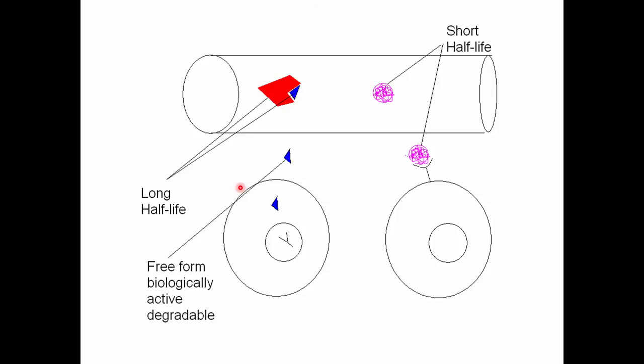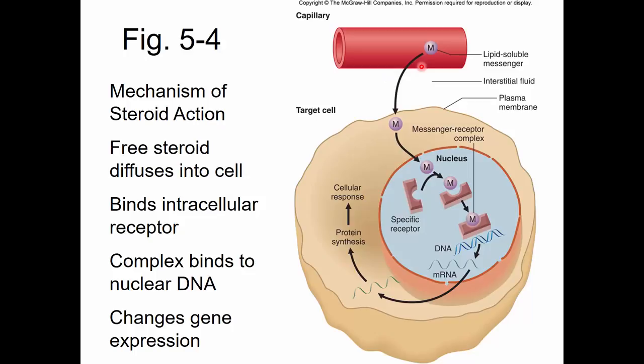In order for a steroid to work, it has to find its receptor, which is inside the cell - sometimes in the cytoplasm, but many times in the nucleus. The free steroid diffuses into the cell, finds its intracellular receptor, and the complex - the receptor and steroid together - acts as a transcription factor. They guide or repel access to the promoter region on a gene.